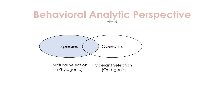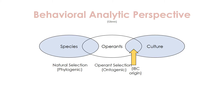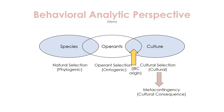Looking at the diagram again with culture added: it is in this area where we are talking about interlocking behavior contingencies and their origin — where operant behavior within individuals starts to merge and meet the operant behavior of other individuals. This is what is known as cultural selection. From here, cultural selection leads to what is known as a metacontingency, and metacontingencies are what give rise to new behavior formed by the culture that is reinforcing to the culture.